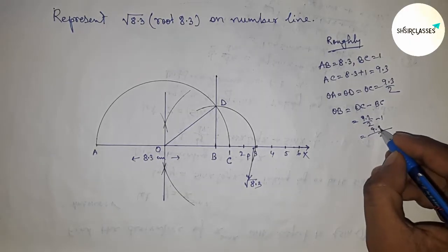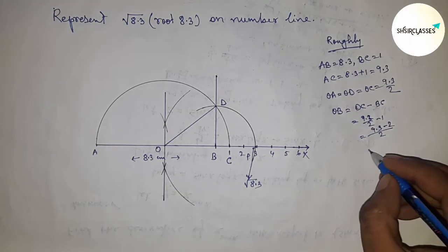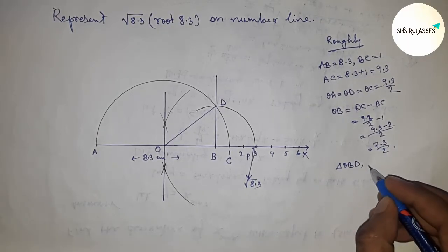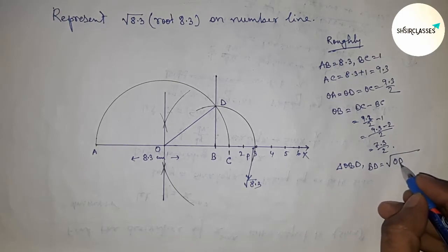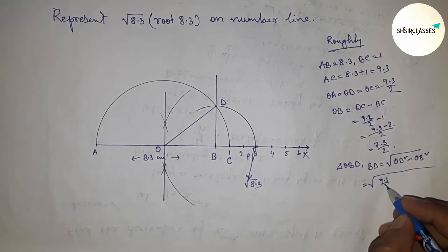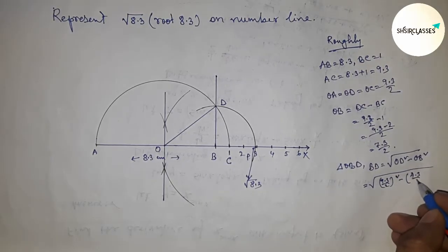From right angle triangle OBD, we can say that BD = √(OD² - OB²). Putting the values of OB and OD and applying the formula a² - b² = (a+b)(a-b).